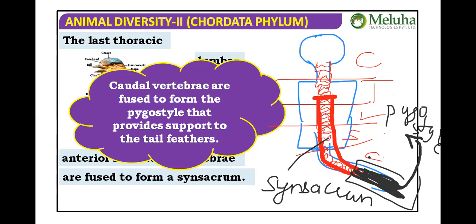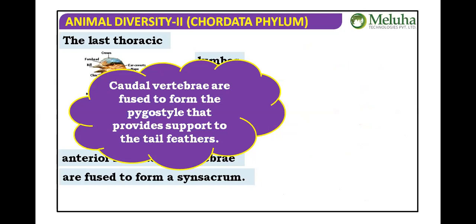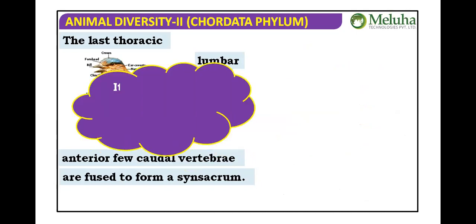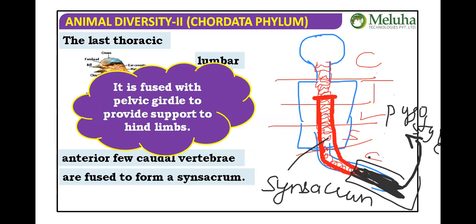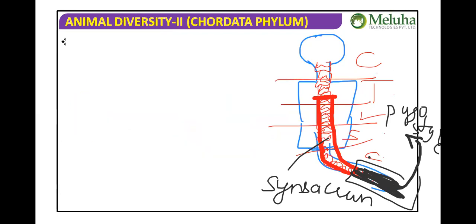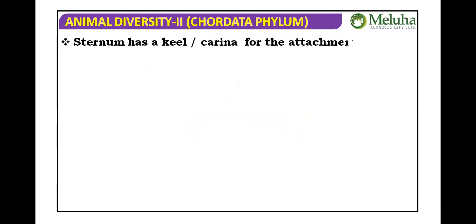The synsacrum and pygostyle are fused with the pelvic girdle, providing support to the hind limbs.